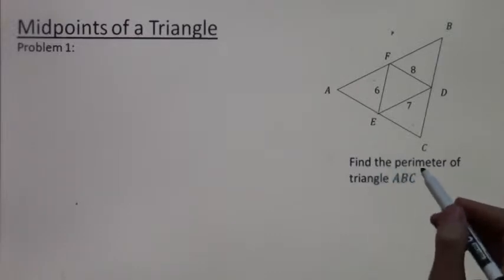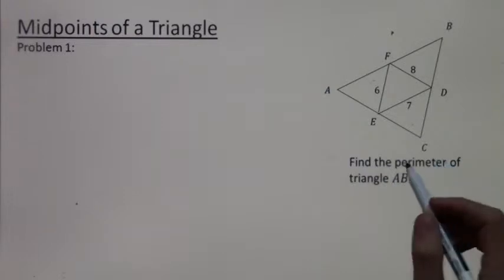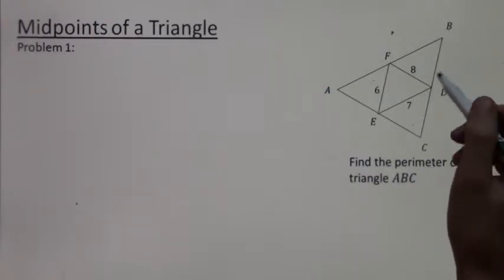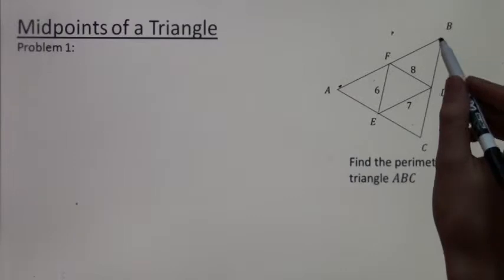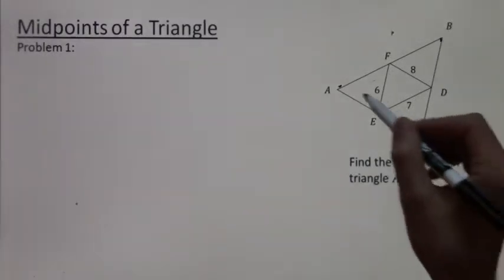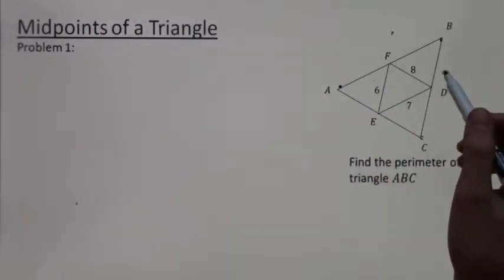Now in this problem, we are trying to find the perimeter of triangle ABC. So this looks like it might be hard, but it is actually not that bad. Oh, and of course, E, F, and D are midpoints of their respective sides.